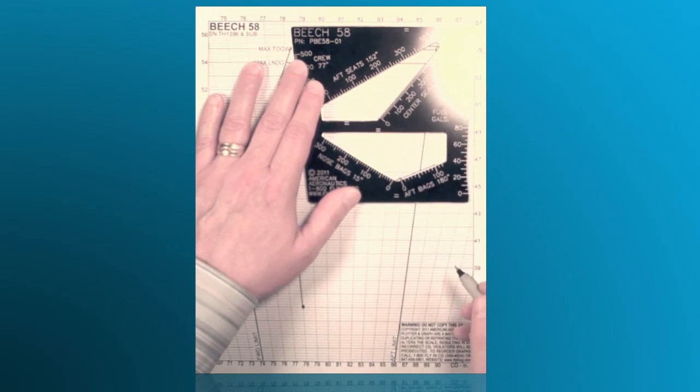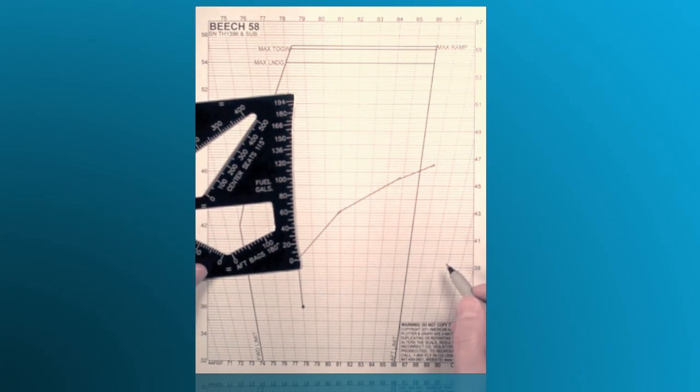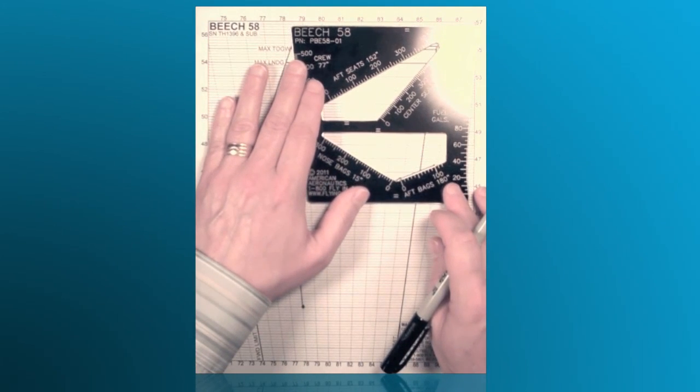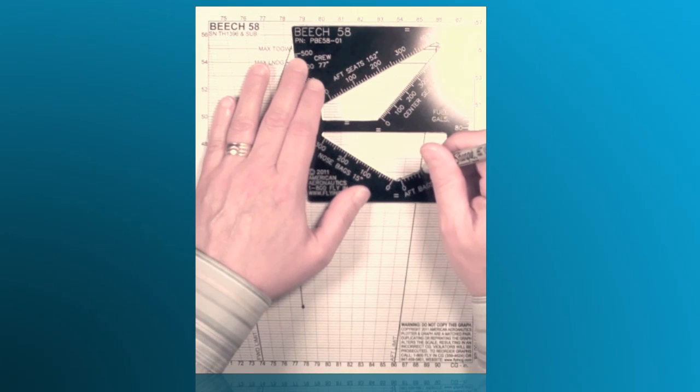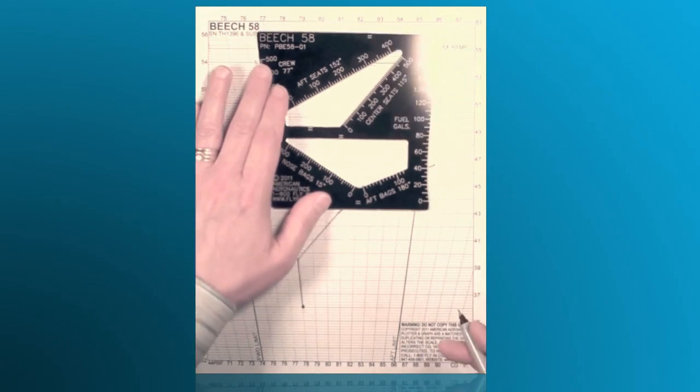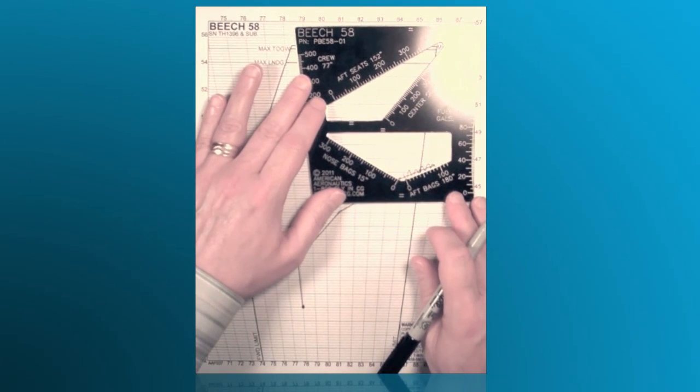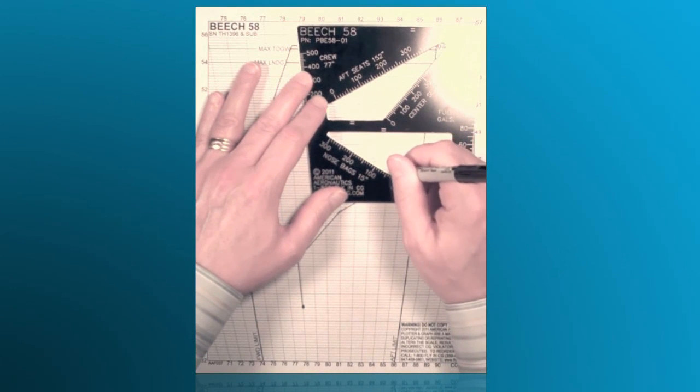Clearly, we're outside of the aft center of gravity limits for the aircraft. We can either reduce the weight of baggage in that compartment. Without even doing any math, simply just draw right to the aft limit. But, for simplicity, we're just going to put the 100 pounds in the nose baggage instead of the aft baggage compartment.